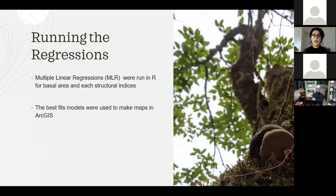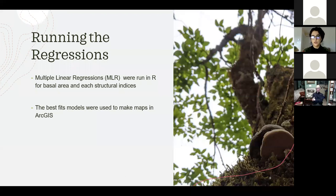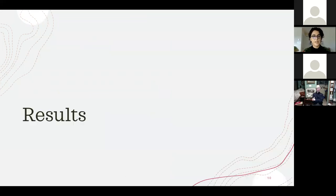After getting the stand-level metrics from the canopy height model, I used those values to run multiple linear regressions in R for basal area and each structural index. The best-fit models were then used to make maps in ArcGIS. An additional unsupervised classification was also run on the canopy height model. With that, the methods are done.